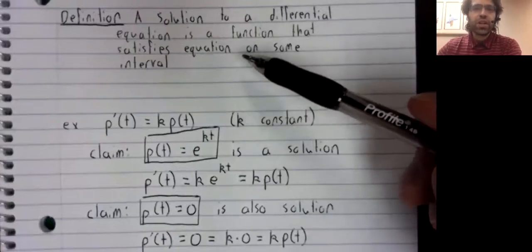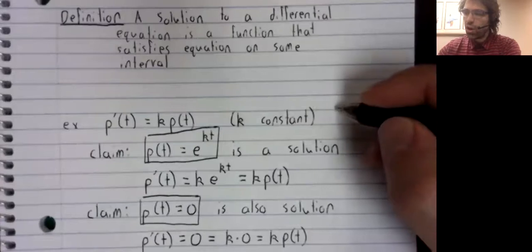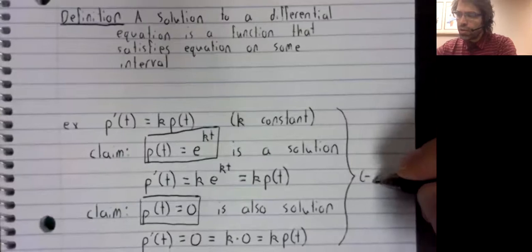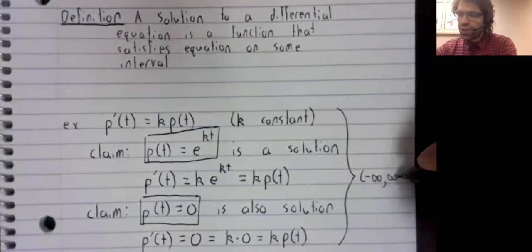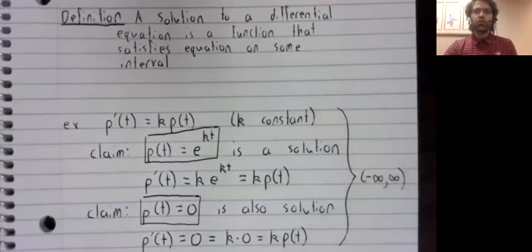In the definition, I say it needs to satisfy the equation on some interval. For both of these examples, this is true on the entire real number line.